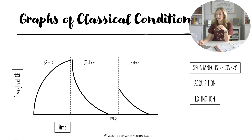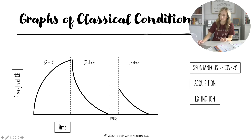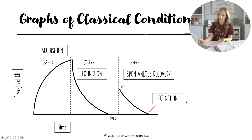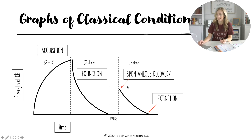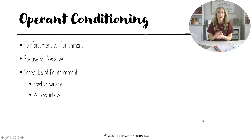After a pause in conditioning, when the conditioned stimulus is presented again, the subject responds again. Applying vocabulary to this graph: acquisition is happening in that first phase, extinction eventually happens once they're presenting only the conditioned stimulus, and then the subject would spontaneously recover the response after some time, though it more quickly goes extinct again.